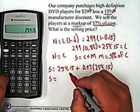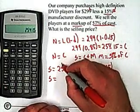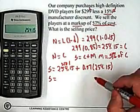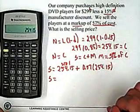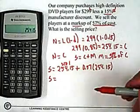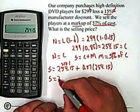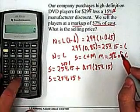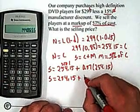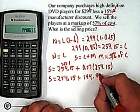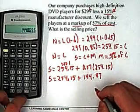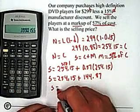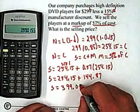I'm going to use my store function — I'll store the value as store one. The reason I'm using the store function is because I'm going to have to multiply this number by 57% and then add the 254.15 back to it. It's just easier to use the store function. So, our markup is $144.87, and now I'll add it to recall one. Here's our selling price: $399.02.